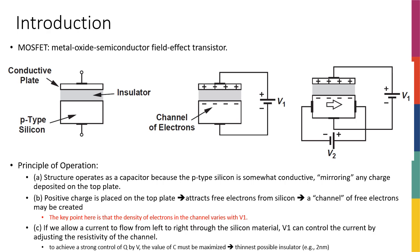MOSFET stands for metal oxide semiconductor field effect transistor. It's a type of transistor that works based on field effect and is made of three layers: metal, oxide, and a semiconductor. We're going to talk about the structure of the MOSFET in the next several slides, and this acronym will make a lot more sense by the time we're done with the physics discussions.